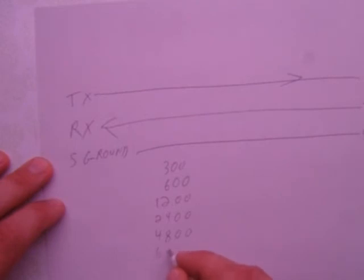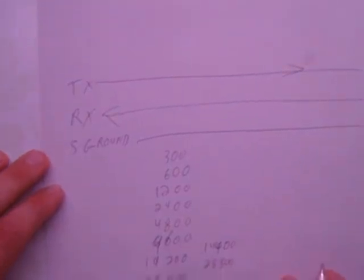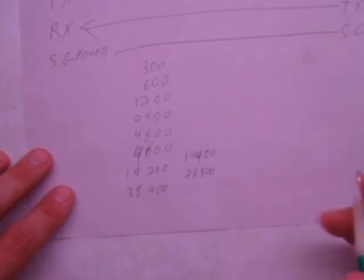If you double it again you'll get 9,600. If you double that again you get 19,200. If you double that again you get 38,400. Somewhere in here they also went to like the 14,400, which is actually 3 times 4,800. And then they doubled that and went to 28,800. I'll move the paper up so you can see it here.